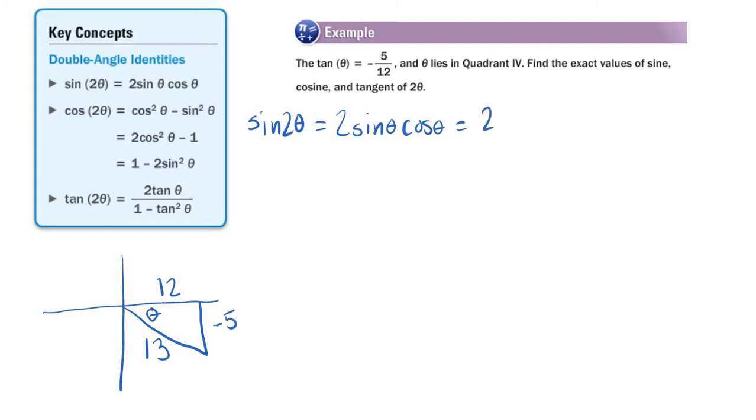Well, sine is opposite over hypotenuse, right? I go back to SOHCAHTOA. So it's 2 times negative 5 over 13. And what's cosine theta? Well, it's 12 thirteenths. Again, SOHCAHTOA. So 12 thirteenths.